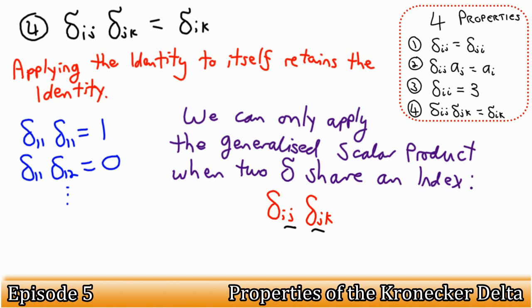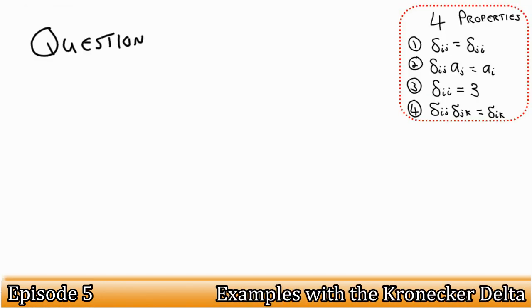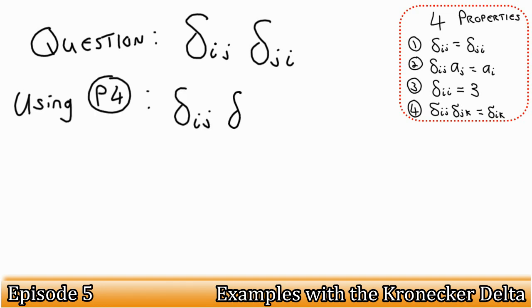Okay, let's have a look at some further examples, just to make sure these properties are fully understood. What would happen if we had delta ij delta ji? Well, using property 4, we get delta ii, which leads us directly into property 3. So delta ij delta ji is a scalar, 3.